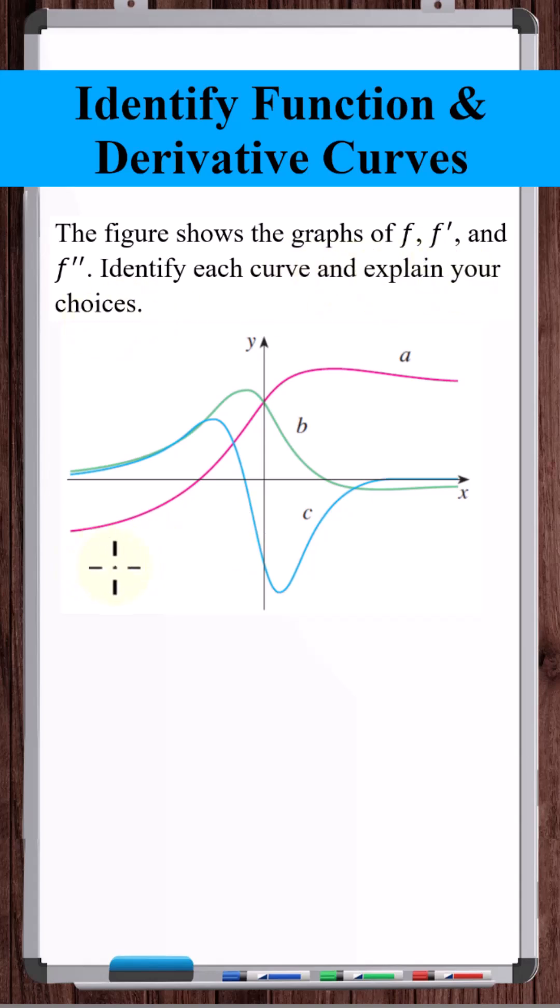So the first thing I notice is that all three of these curves, kind of in this region here, they all have positive slopes. And furthermore, they're all concave up. So the first and second derivative are going to be positive. That means that this can't be the first or second derivative. So A must be F.